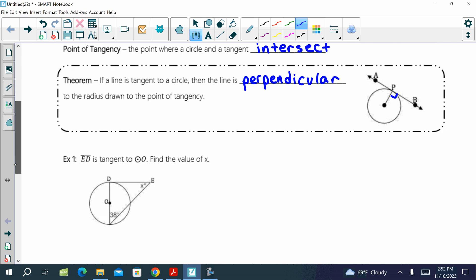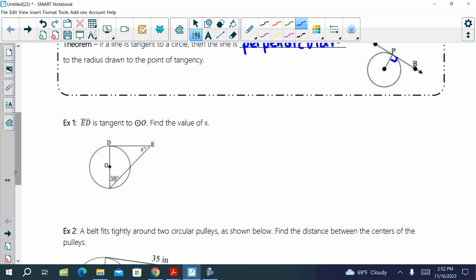So that's going to help us because we're going to have pictures like this. ED is tangent to circle O. Find the value of X. So if it's tangent, we can draw the right angle with the radius. And then how does that help us find X? What equals 90? X plus 38 equals 90. So X equals how much?